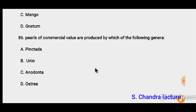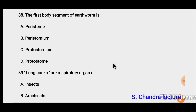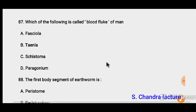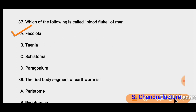Question 86: Pearls of commercial value are produced by which genera. Pearls are produced by Unio. So the correct option must be Unio. Question 87: Which of the following is called blood fluke of man? Fasciola is called the blood fluke of man.